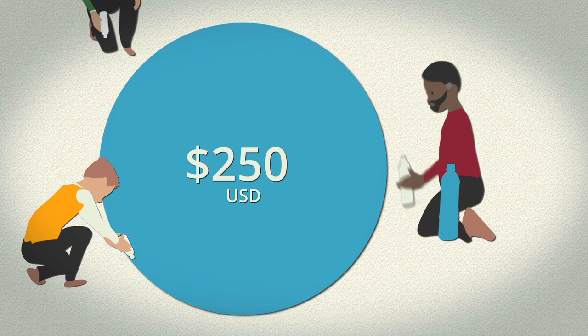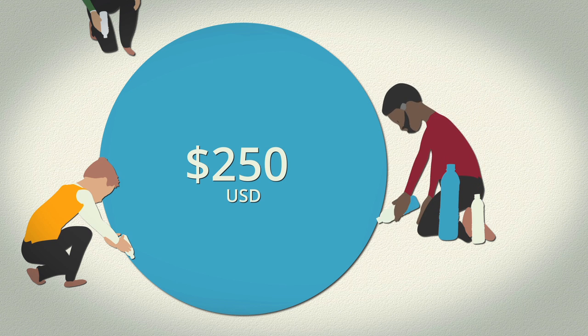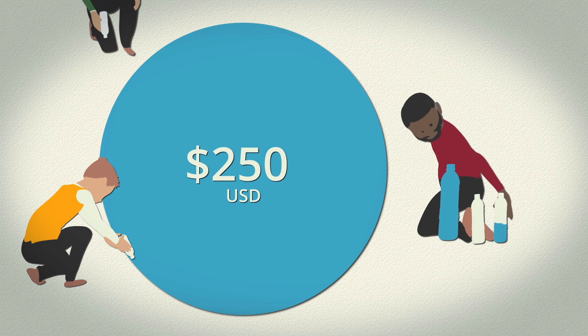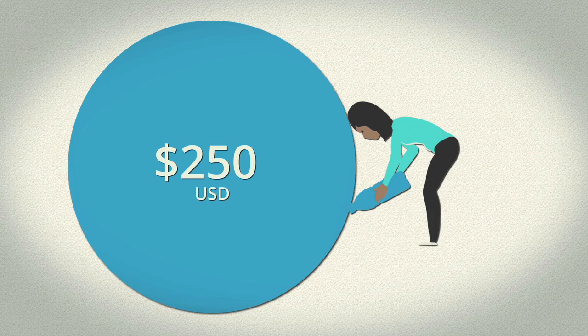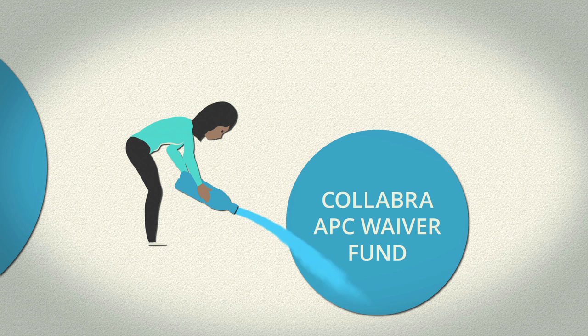Several times a year, editors and reviewers have their points converted to monetary value. They can either cash out this value or donate it to the journal's APC waiver fund, which helps other researchers get their work published in our journal.